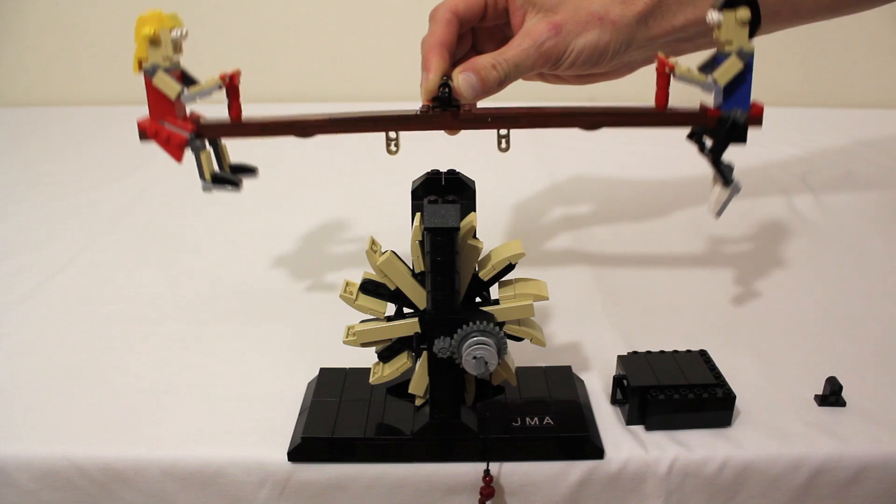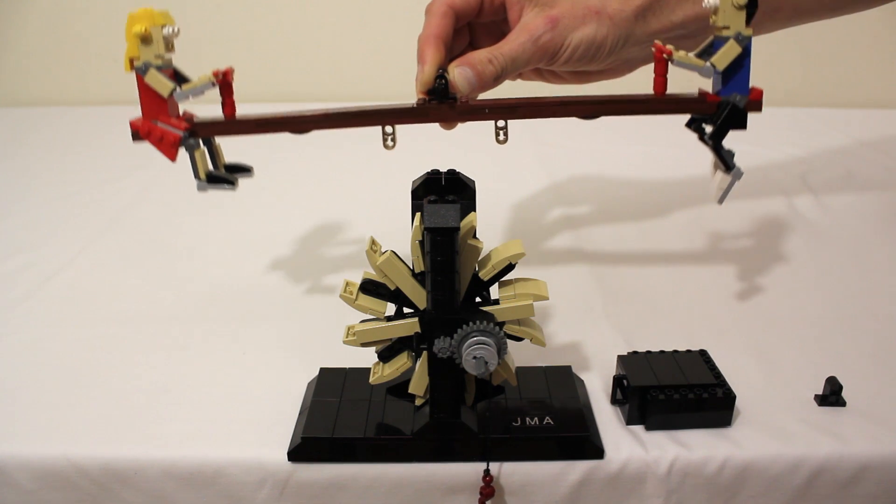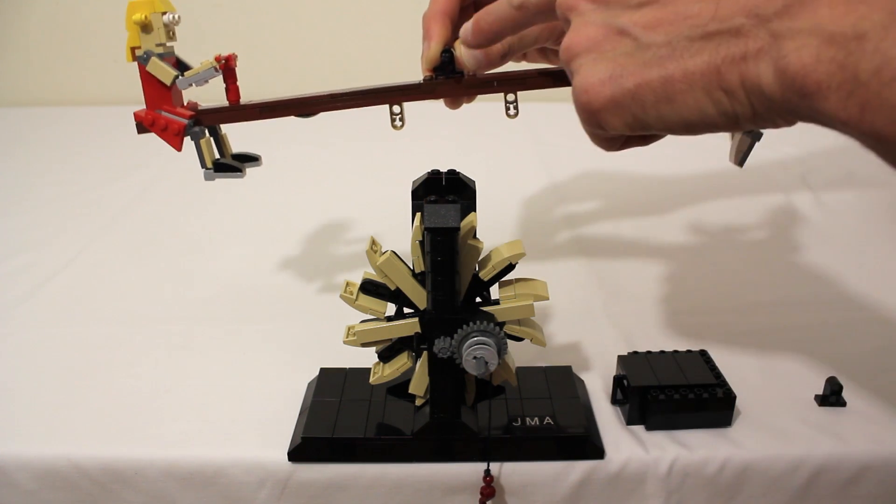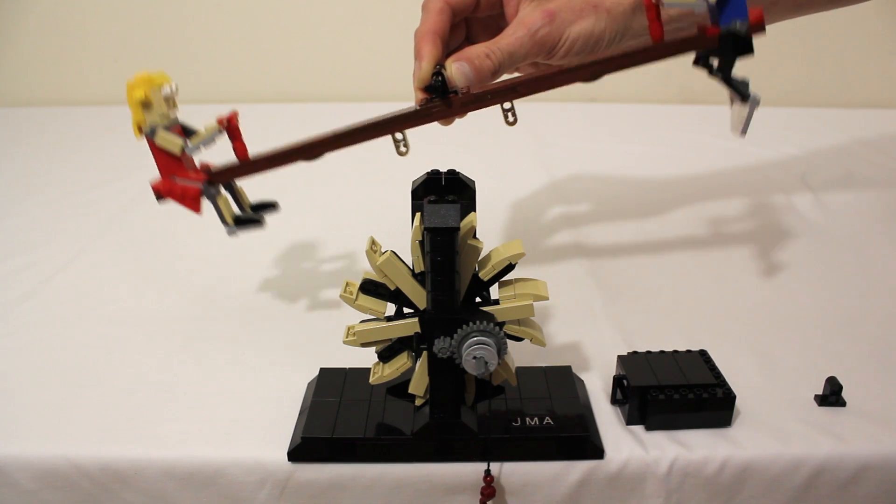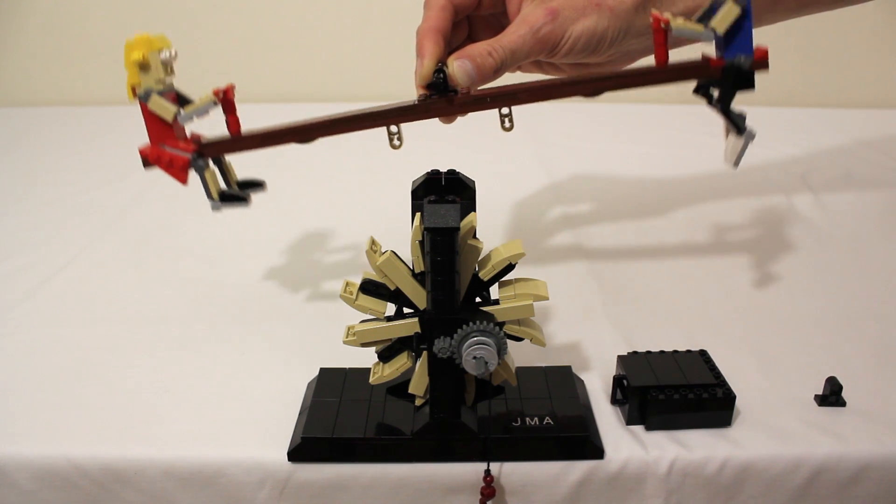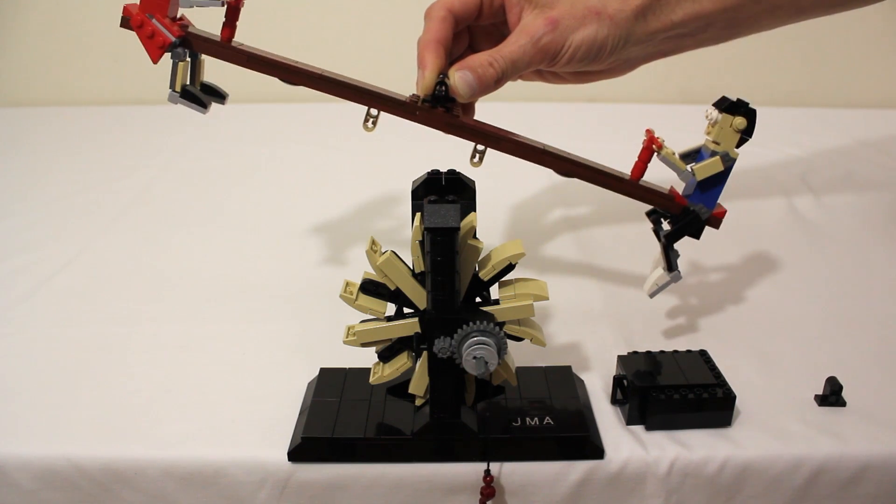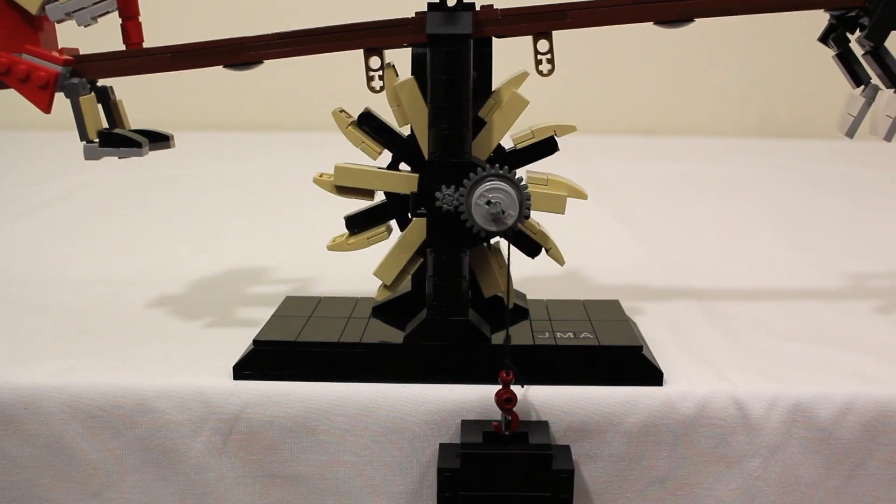That is because the only real requirement for something to be a pendulum is that the center of gravity has to be below the pivot point. That way, whenever you displace it, like so, gravity will always keep pulling it back to a state of equilibrium.